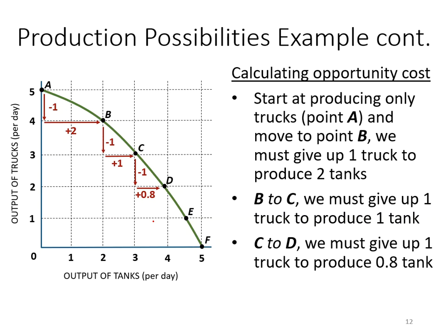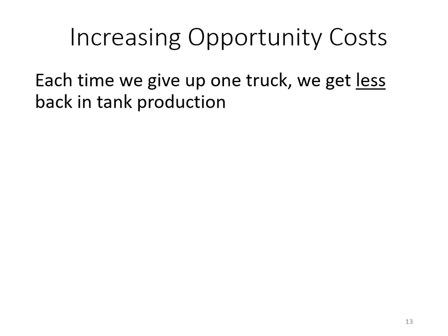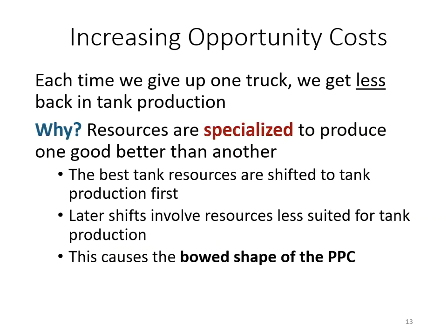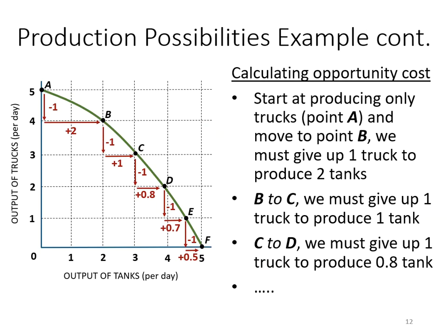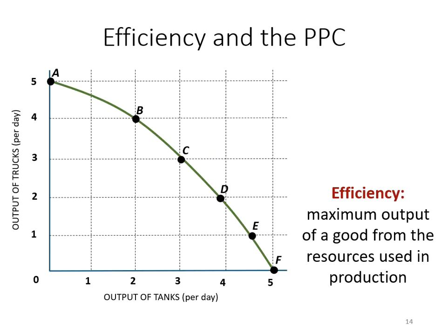If it is the opposite way, then that axis will be your opportunity cost. So that covers the three pieces of information we need to find from the production possibility curve. Besides these, we can also find other things.